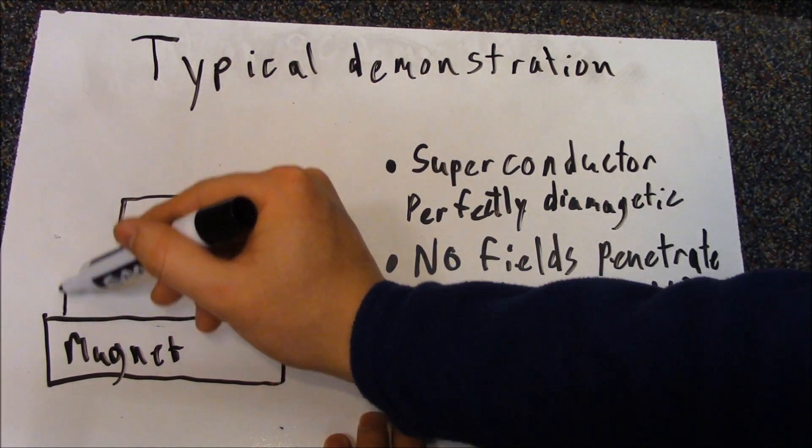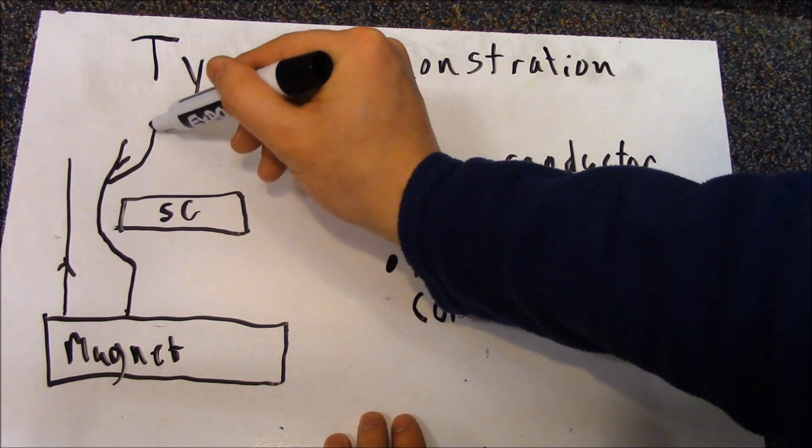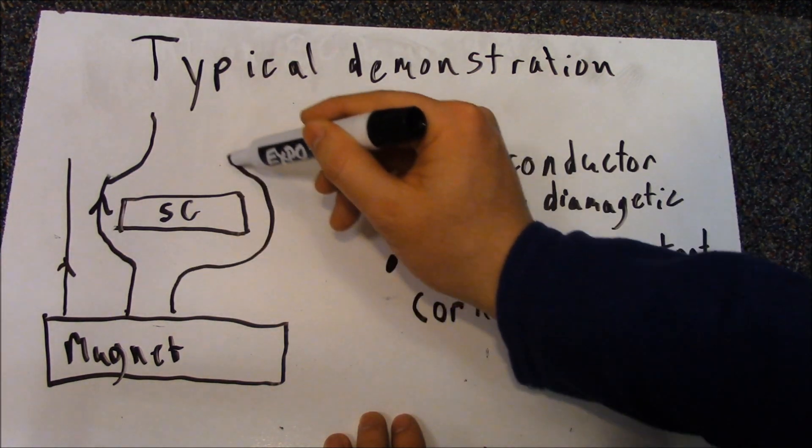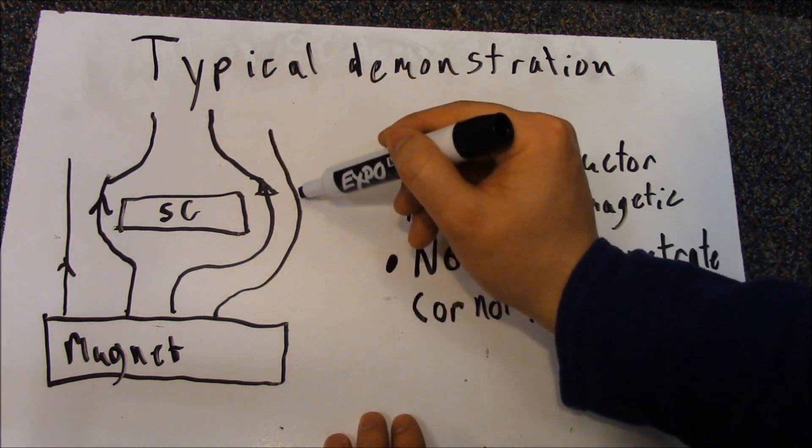If you're having trouble visualizing this, I'll draw the magnetic field lines out for you. For future reference, this is Type 1 superconductor behavior.